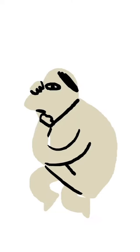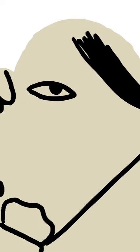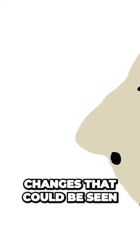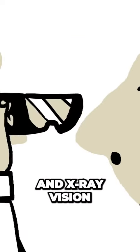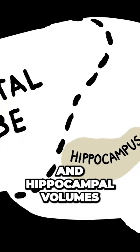And it's not just behavioral symptoms. Depression has physical manifestations inside the brain. First of all, there are changes that could be seen with the naked eye and x-ray vision. These include smaller frontal lobes and hippocampal volumes.